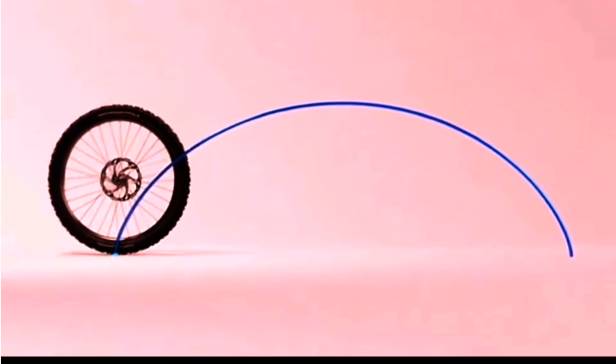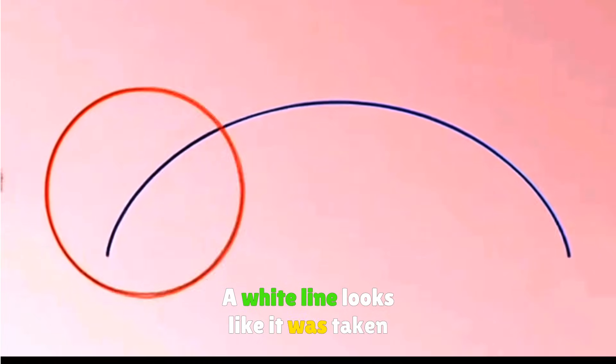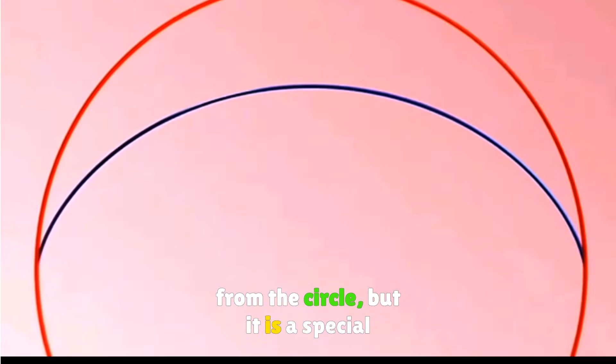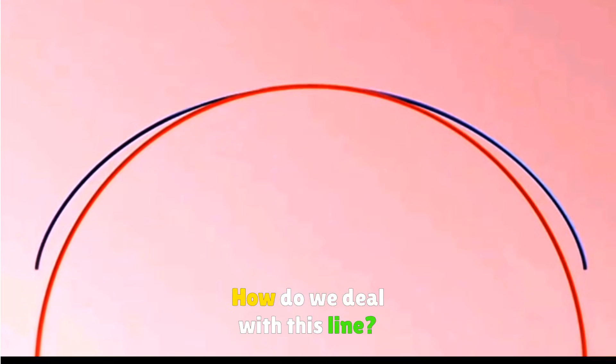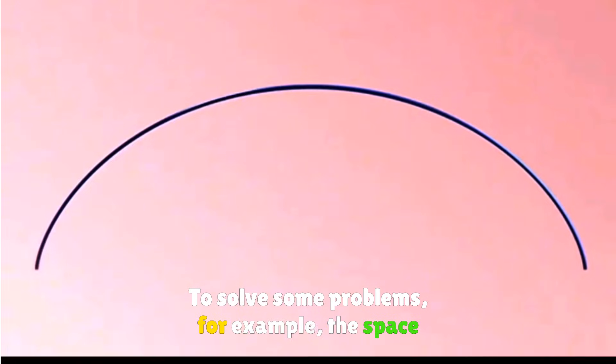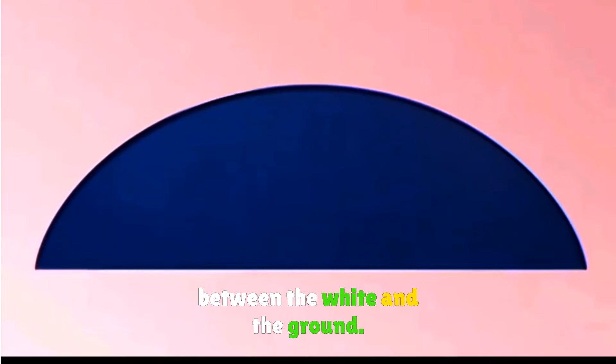A cycloid looks like it was taken from a circle, but it is a special line. How do we deal with this line to solve some problems, for example the space between the cycloid and the ground?